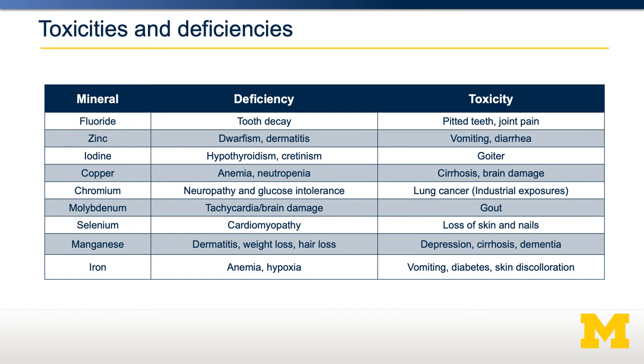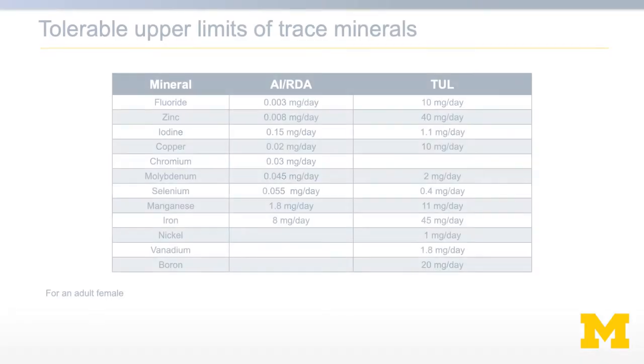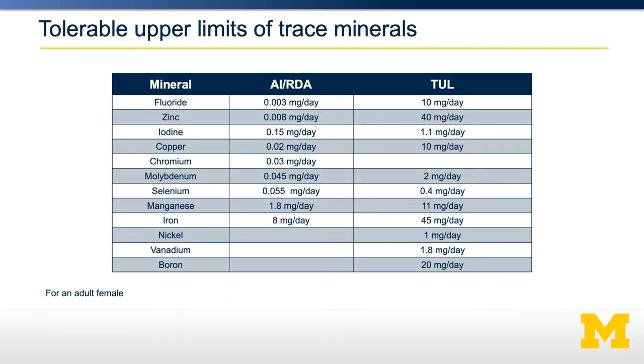Similarly, while a lack of molybdenum can result in tachycardia or brain damage, too much molybdenum can result in gout. This means that most trace minerals are required to be ingested within a range — more than is required to avoid deficiency, but less than the amount that causes toxicity. Therefore, most minerals have set adequate intakes or recommended daily allowances as the minimum amount needed, and a tolerable upper limit, which is the amount above which too much can cause disease.